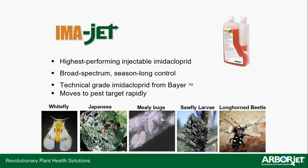IMAJET is a very broad-spectrum product. Both IMAJET and Triage were formulated specifically for trunk injection, which is why they work so well. The solvents in these products move the active ingredient very effectively through the plant to the pest feeding site, and once the product reaches the pest feeding site, we get long-term control.